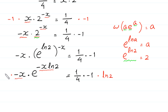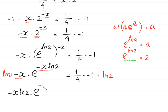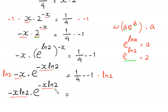At the left side we multiply by ln 2, giving ln 2 times negative x times e^(negative x times ln 2). Now we have the same expression — negative x times ln 2 — in both positions. We can use the Lambert W function on the left side.